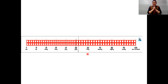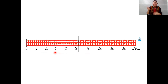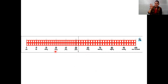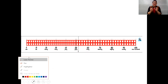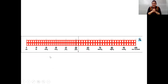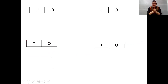And now let's see how many tens in the number 30. Say it together. One ten, two tens, three tens. Three tens makes 30. T stands for tens and O stands for ones.